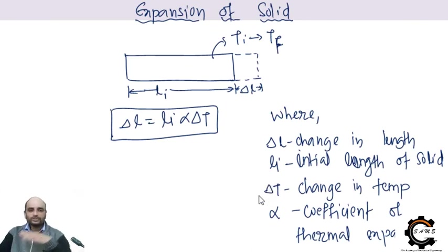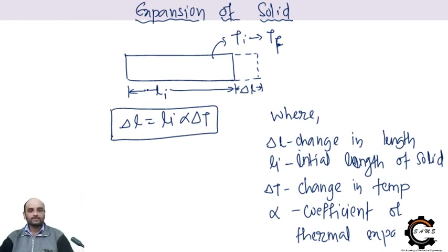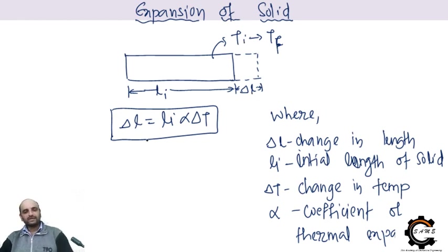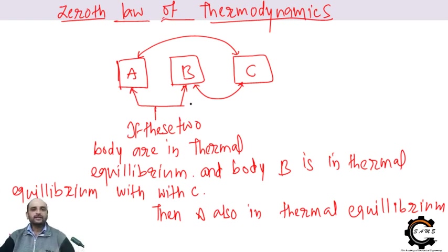Now, expansion of solids. This topic is also related to strength of materials in engineering. The formula is: ΔL = Li · α · ΔT, where ΔL is the change in length, Li is the initial length, α is the coefficient of thermal expansion (per degree), and ΔT is the change in temperature. ΔL equals the final length minus the initial length, so you can also calculate the final length of the rod after heating.